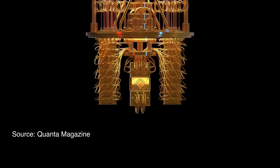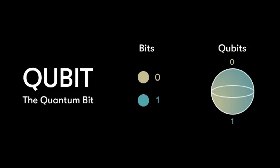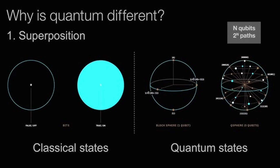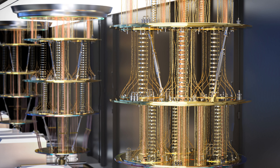Instead, quantum computers process information using quantum bits, that is qubits, which means they can represent both zero and one simultaneously through superposition. This allows a quantum computer to perform complex calculations and complex tasks very fast and very efficiently. Because of this ability, it has many real-world applications, which we will discuss later.